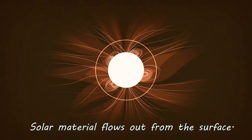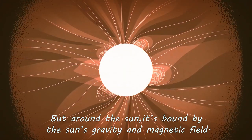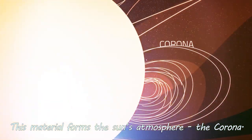Solar material flows out from the surface but around the Sun, it's bound by the Sun's gravity and magnetic field. This material forms the Sun's atmosphere, the corona.